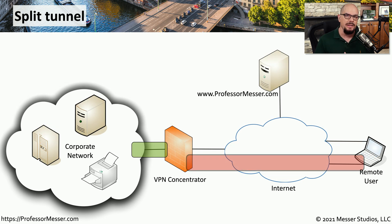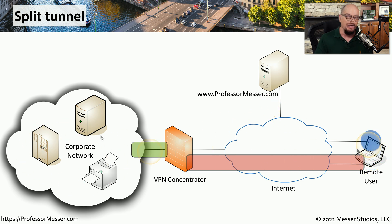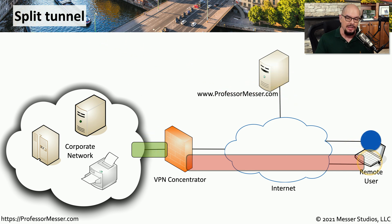With a split tunnel, the VPN administrator can determine what traffic is sent over the VPN and what traffic can be sent outside the scope of the VPN tunnel. For example, anything sent to the corporate network would go through the VPN tunnel, but traffic destined for a site like ProfessorMesser.com — which is not on the corporate network — can be sent outside the VPN tunnel. This allows the client to communicate with the internet without using resources on the VPN concentrator at the corporate network.